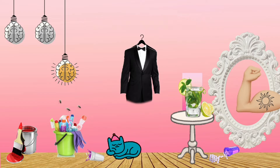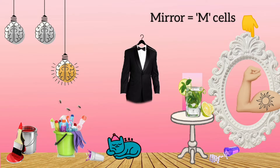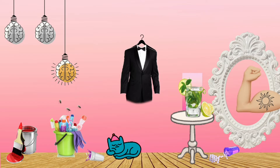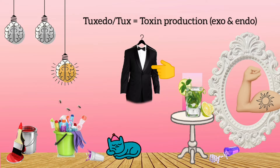The mirror represents M cells, which help in the entry of Shigella into the intestinal mucosa. The tuxedo hanging on the wall represents that Shigella produces toxin — it produces the Shiga toxin, and both exotoxin and endotoxin.